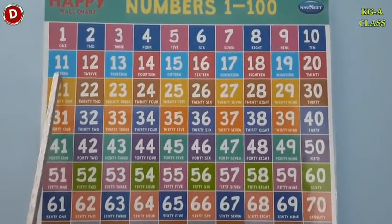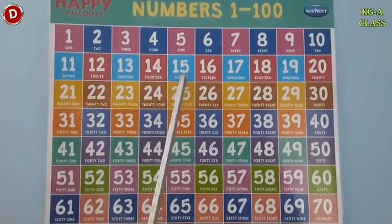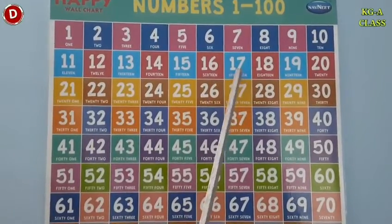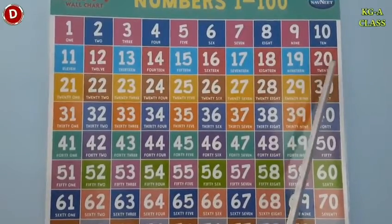After 10 comes 11, 12, 13, 14, 15, 16, 17, 18, 19 and here comes 20. 2, 0, 20.